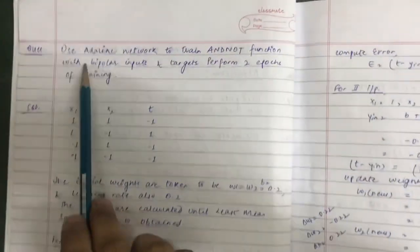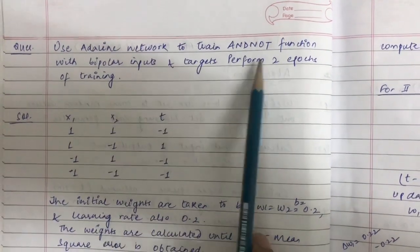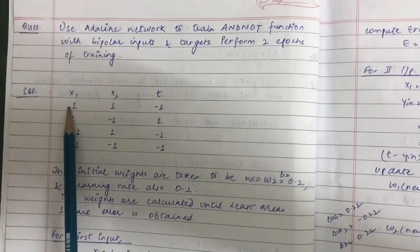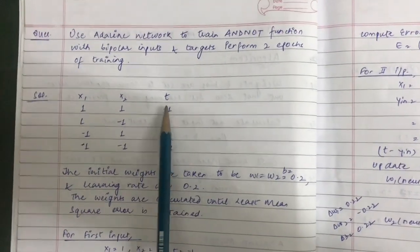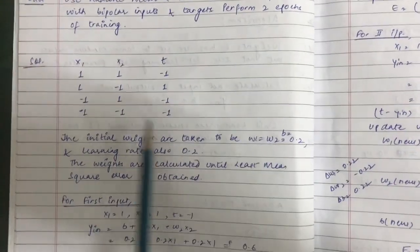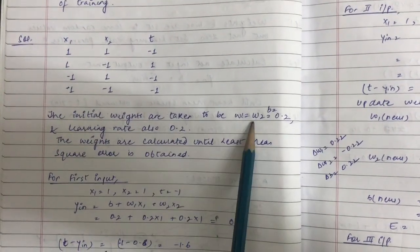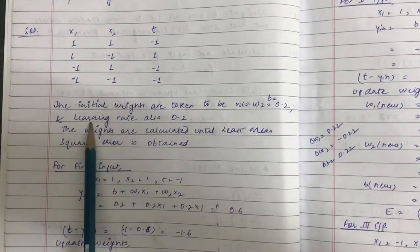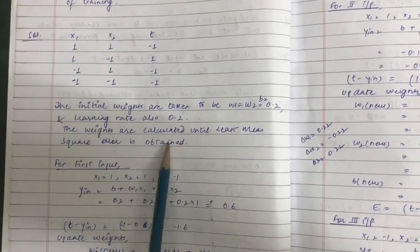The question is to use the ADALINE network to train an AND-NOT function with bipolar inputs and targets, performing two epochs of training. The AND-NOT function output is true if the first input is true and the second is false. Bipolar inputs are 1 and −1, just like binary inputs are 1 and 0. We construct the truth table first, then initialize: w1 = w2 = b = 0.2, and learning rate alpha = 0.2.